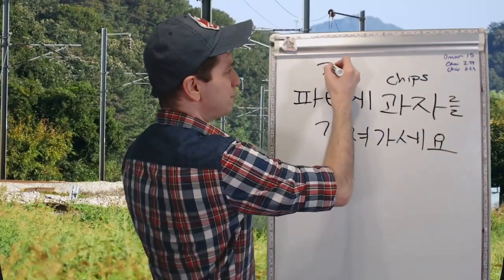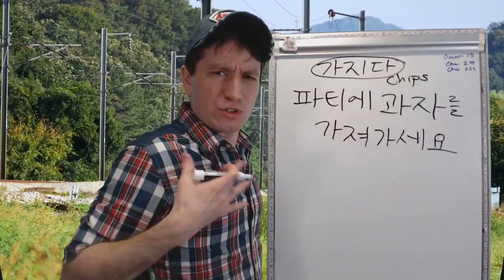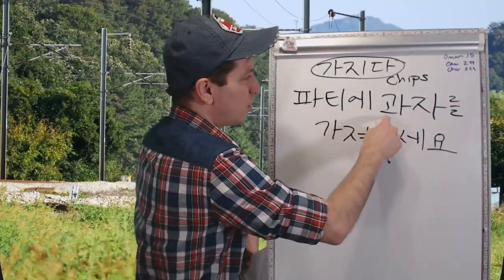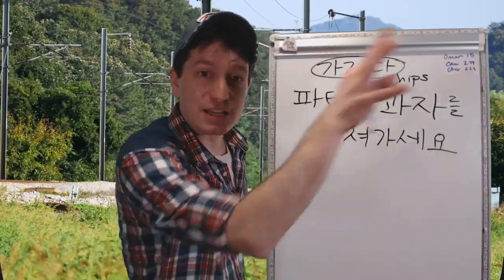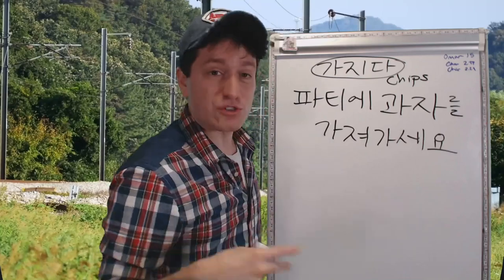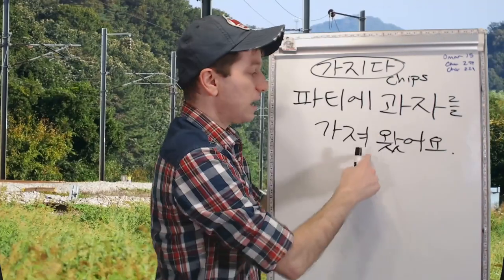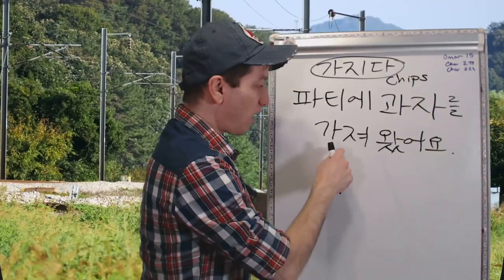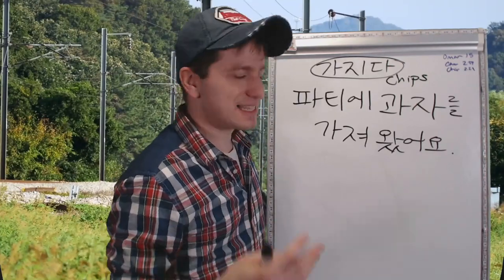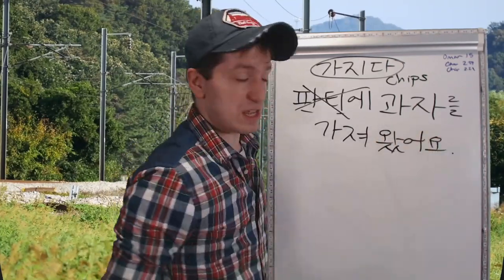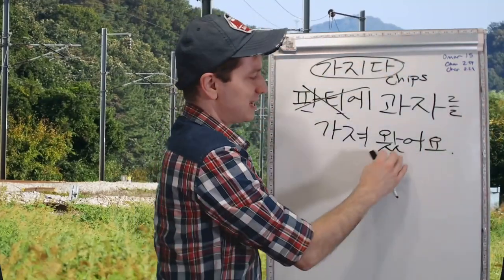가져가다/오다 comes from 가지다, which means to carry or to hold on your person. 파티에 과자를 가져가세요 — carry some candy, take some candy to the party and go. And 가져오세요 — now bring it here. 가져왔어요 means 'I brought it' — I had it on my person and then 왔어요, I came here. I brought snacks here; I put them on my person and then I came here.